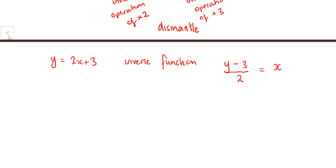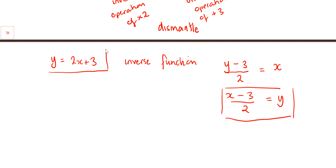Instead of treating this as the opposite of the original, we write it as its own function. So instead of starting with y and ending at x, we write it normally starting with x. So the inverse operation of the original, when applied as a function, uses x as input and produces y. There is a reason why swapping x and y doesn't always make perfect real-world sense, but we won't go into that yet.